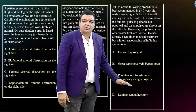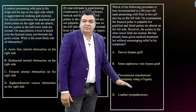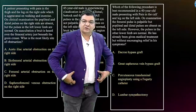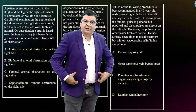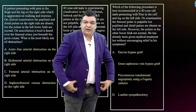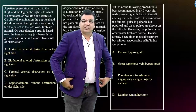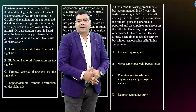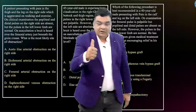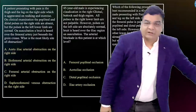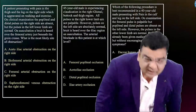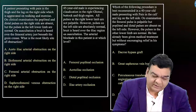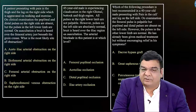They may ask about the best treatment in these situations. For suprainguinal obstruction (aortoiliac), use a Dacron graft. For iliac level obstruction, angioplasty is preferred. For infrainguinal femoropopliteal bypass, the great saphenous vein bypass graft is the treatment. Please be ready for these types of clinical questions.